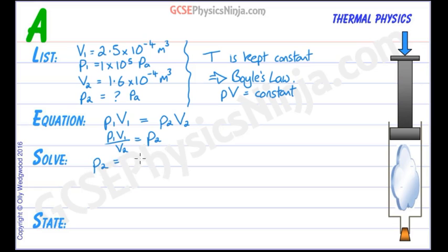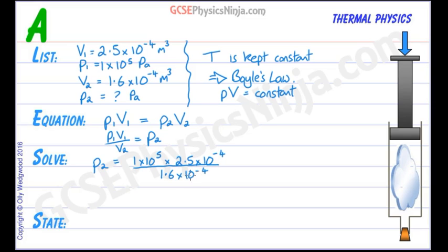So P2 is equal to 1 times 10 to the power of 5 — that's our P1 — multiplied by 2.5 times 10 to the power of minus 4, that's our V1, divided by V2 which is 1.6 times 10 to the power of minus 4. Put that into your calculator and we get P2 equals 156250, and that's in pascals.